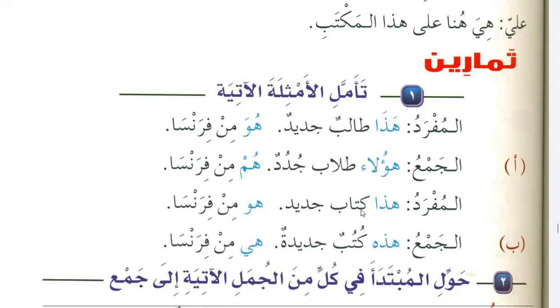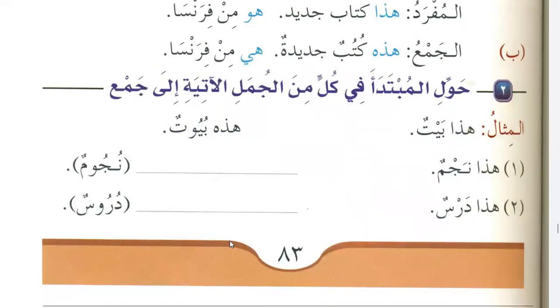For ghair 'aqil, we use the singular feminine pronoun for the plural form. Al-mufrad: Haza kitabun jadidun — this is a new book; huwa min fransa — it is from France. Al-jama': Hazihi kutubun jadidatun — these are new books; hiya min fransa — they are from France.